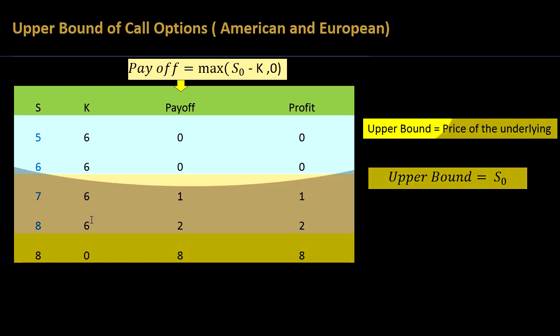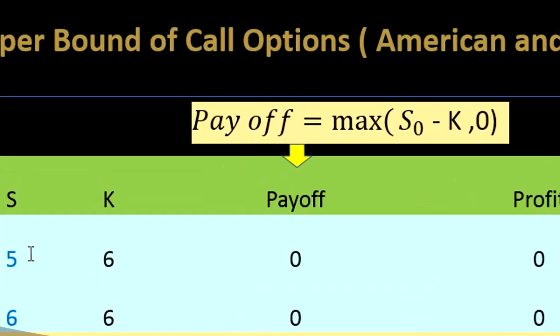Here you can see in the first two rows, let's assume that this is a call option on a particular stock. In this call option, your strike is $6.